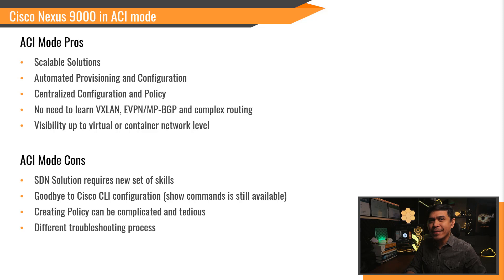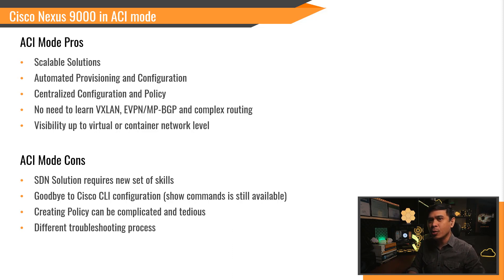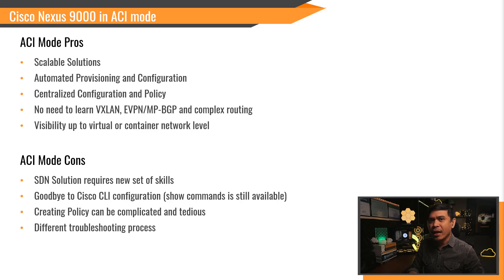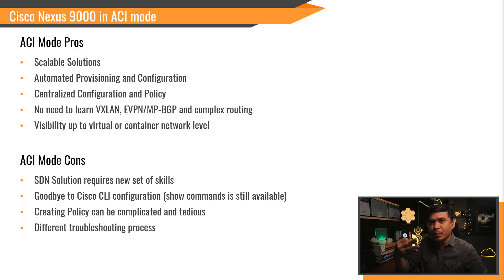Cisco Nexus 9000 in ACI mode — pros. First, Cisco ACI is a scalable solution because it automates the provisioning. If you have 20, 50, or hundreds of switches, initial provisioning is automatically configured — including IP addressing, routing, loopback interfaces, VXLAN, and many others. Centralized configuration and policy means you don't need to configure VLANs and SVIs on every single switch.